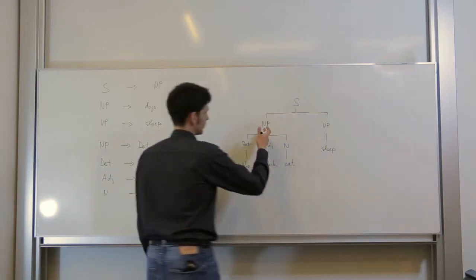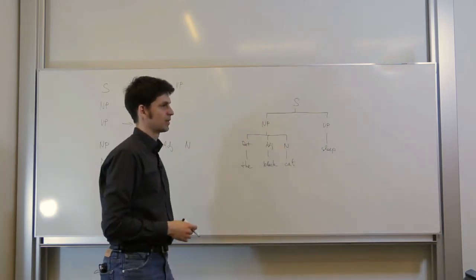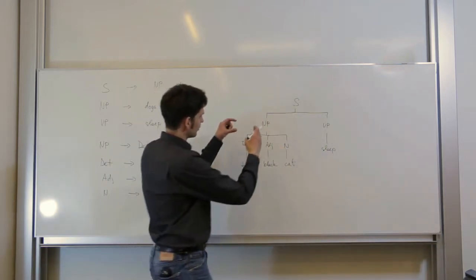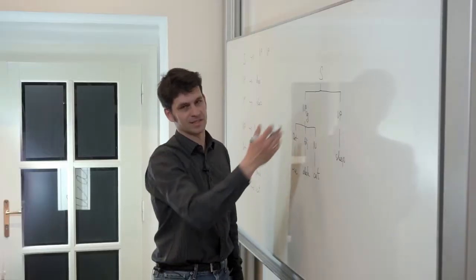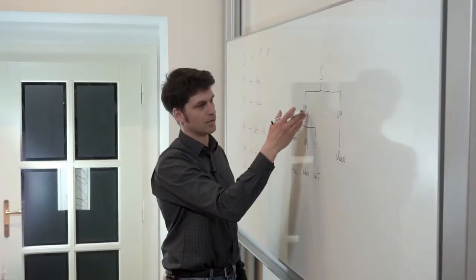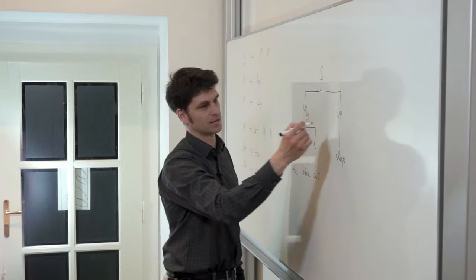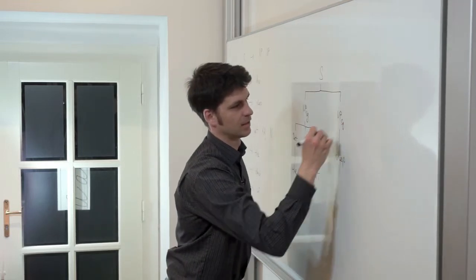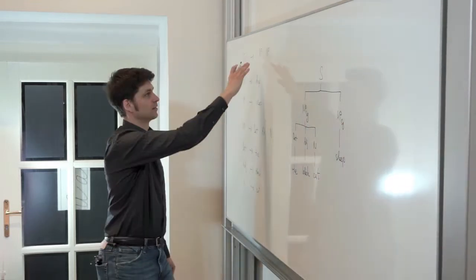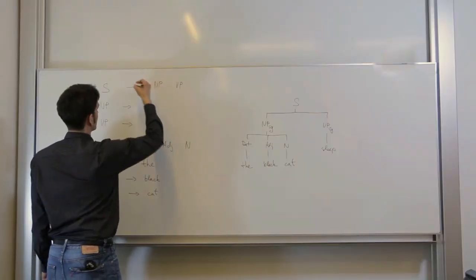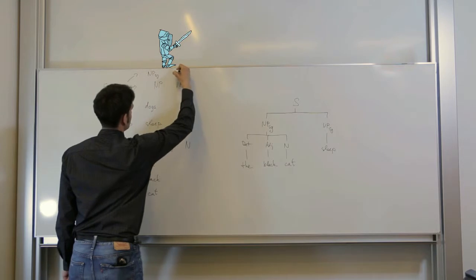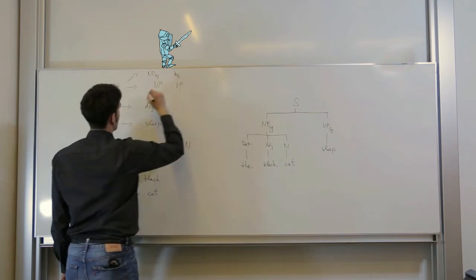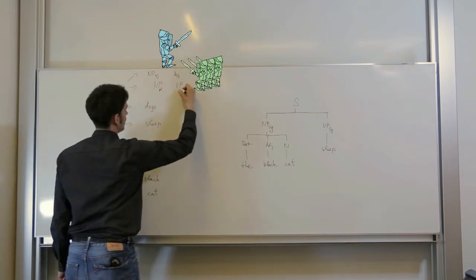The problem is that the rules are considered in the context-free fashion. And when the computer expands this noun phrase, it doesn't know that it will be in singular and this verb phrase will be in plural. In order to capture these dependencies, these agreements, we need to refine the set of non-terminals. And we also need to refine the set of rules. So S should either go to NP in singular and VP in singular or NP in plural and VP in plural.